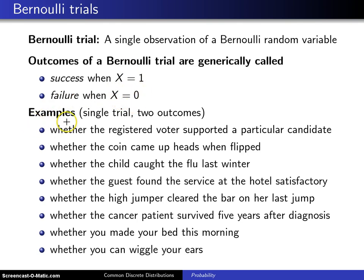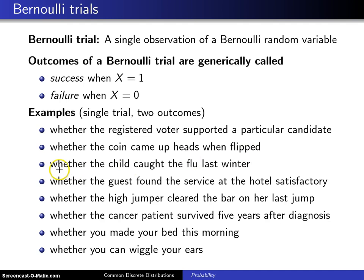Here are a few examples of a single Bernoulli trial, each of which has two different outcomes. The first is whether the registered voter supports a particular candidate. The second is whether the coin came up heads when it was flipped. Third, whether or not the child caught the flu last winter.